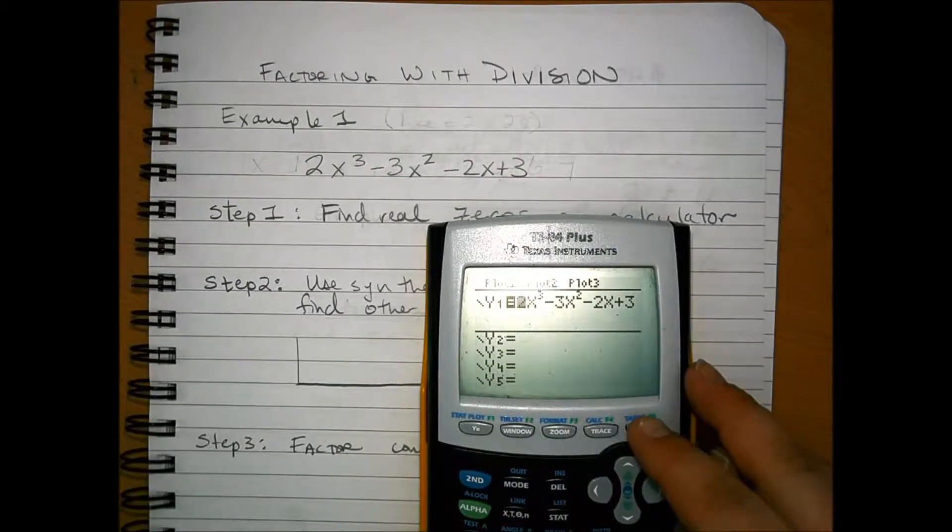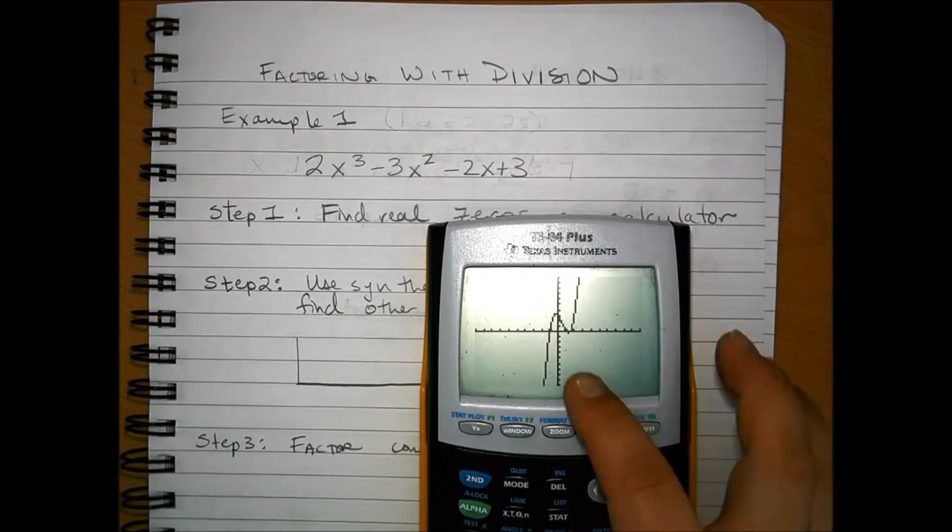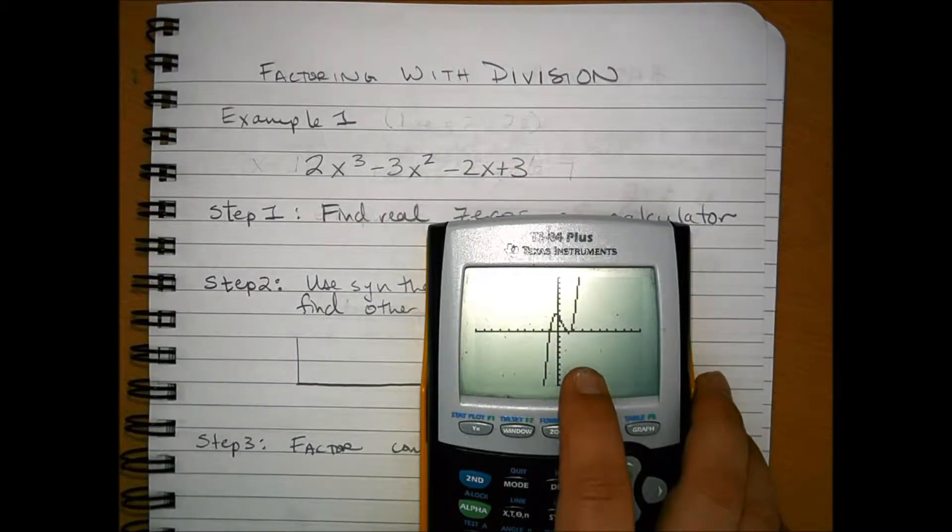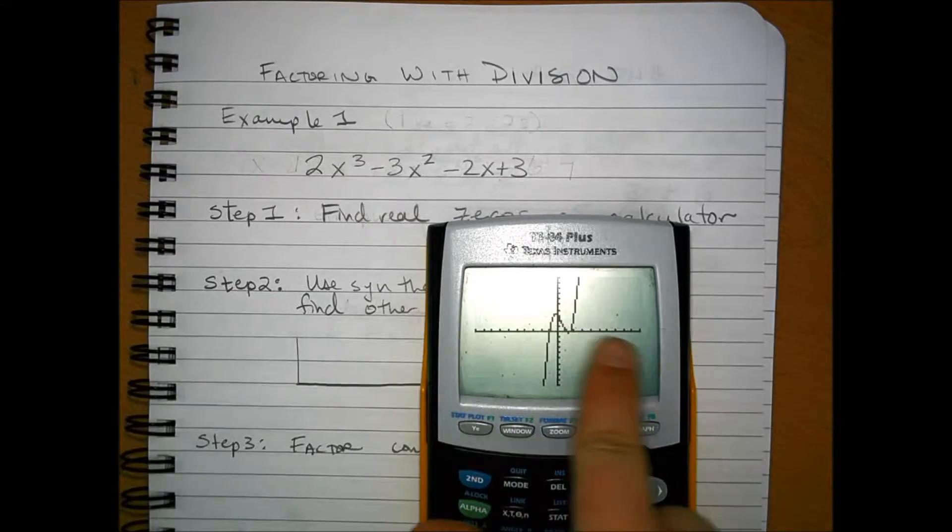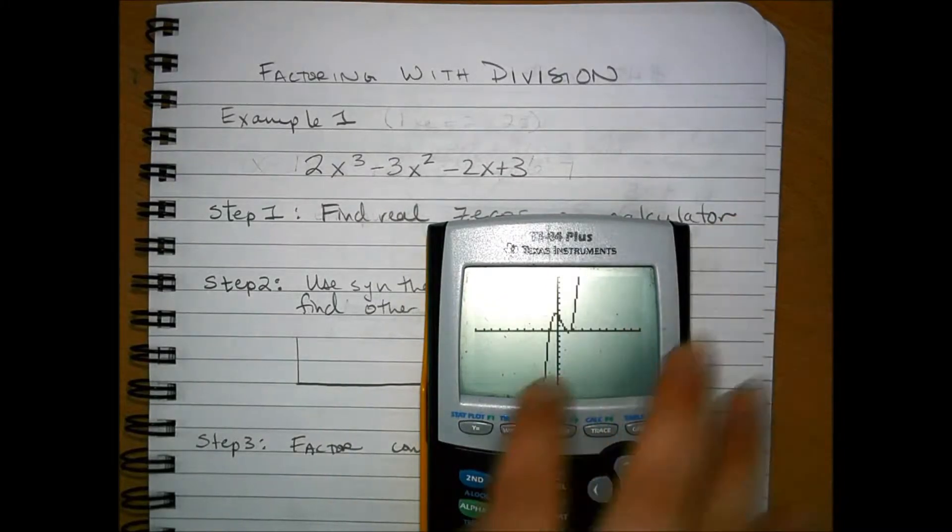I'm just going to assume that you know what that is, but those of you who want to know, I have set up the window to the standard. So this is negative ten, this is positive ten, positive ten, and negative ten.